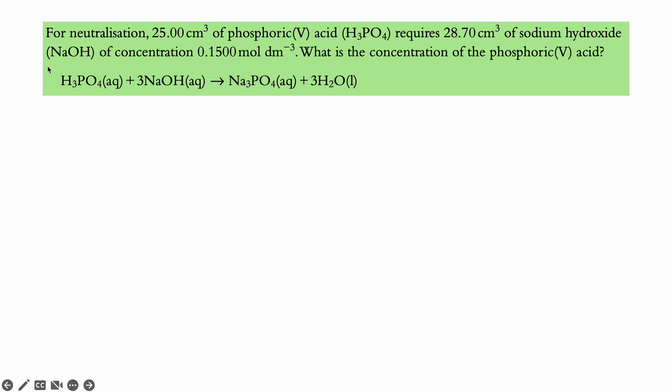So we have our problem here, which is for the neutralization of 25 centimeter cube of phosphoric acid H3PO4, it requires 28.70 centimeter cube of sodium hydroxide NaOH of concentration 0.1500 mole per DM cube. What is the concentration of the phosphoric acid? In this case, let's highlight the important parts. So we know that we have 25 centimeter cube of phosphoric acid. Remember that one centimeter cube is the same as one milliliter. So just don't get confused about that.